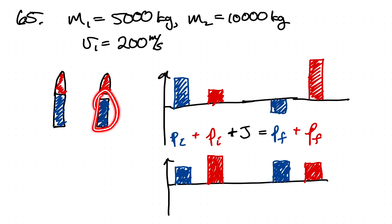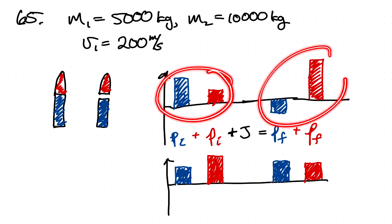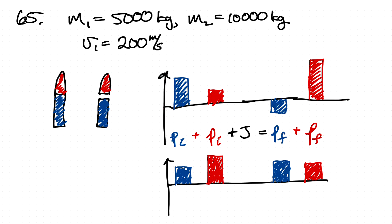And then the momentum of the rocket will increase, because in the situation, we need to have that the sum of these two things equals the sum of these two things. So as long as this decreases, this has to increase.